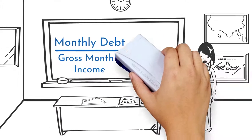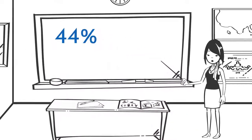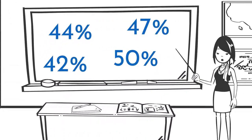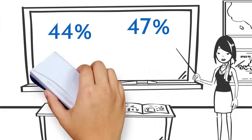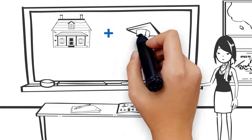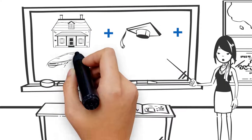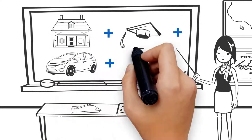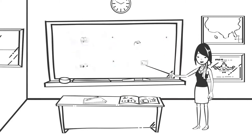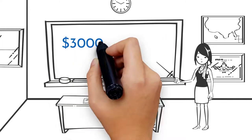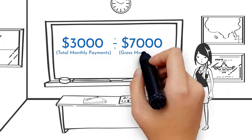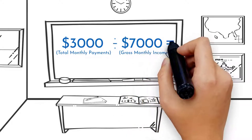Different mortgage programs may have different DTI requirements. To calculate your debt-to-income ratio, add up your total monthly payments for items such as your mortgage, student loans, auto loans, and credit cards. Then divide by your gross monthly income — the amount you earn each month before taxes and other deductions.